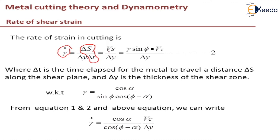So in a previous slide we already derived equation for Vs. So I will substitute that here gamma sin phi into Vc by delta y. So I will call this as equation 2. So delta t is the time elapsed for the metal to travel a distance of delta S and delta y is the thickness of the shear zone.